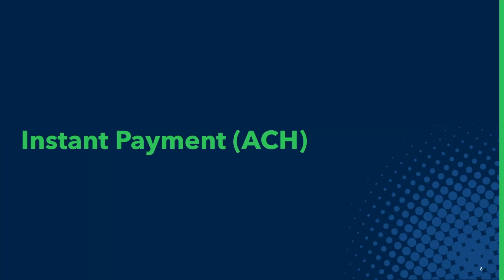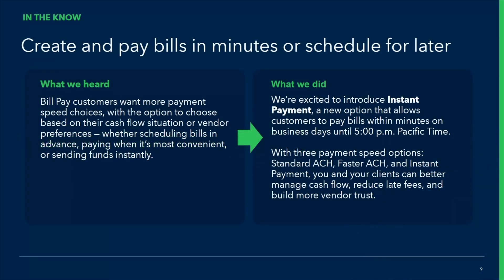The next update is around instant payment for ACH payments. We know that in this age of digital payment methods, ACH is becoming a lot more common and preferred by many vendors and clients. What we heard is that Bill Pay customers want more payment speed choices, with the option to choose based on their cash flow situation or their vendor preferences. Some like to schedule bills in advance, others pay when it's most convenient depending on net terms, and sometimes people need to send funds instantly. This new option allows your clients to pay bills within minutes on business days until 5pm Pacific time.